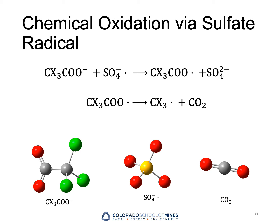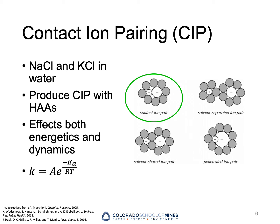Here is the reaction for sulfate radical mediated haloacetic acid oxidation. Oxidation is a process by which an atom or molecule loses one or more electrons. The precursor for the sulfate radical is peroxydisulfate. In the reaction, X represents a halogen substitute. Sodium and potassium ions are commonly found in drinking water. Since the ions are positively charged and the haloacetic acids are negatively charged, these two species are able to form an ion pair in solution.